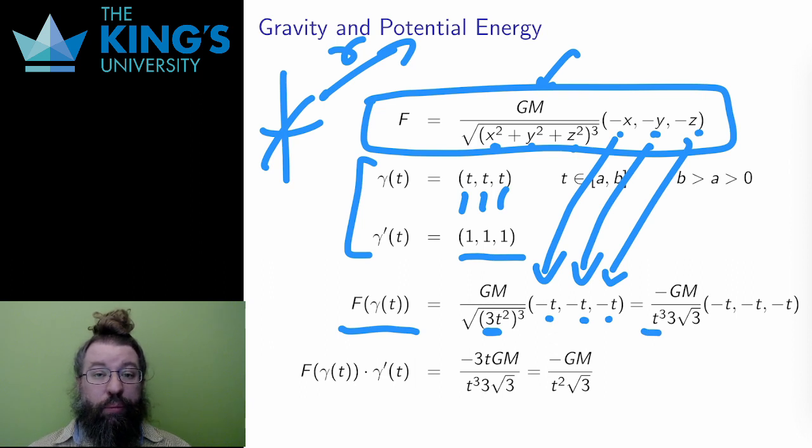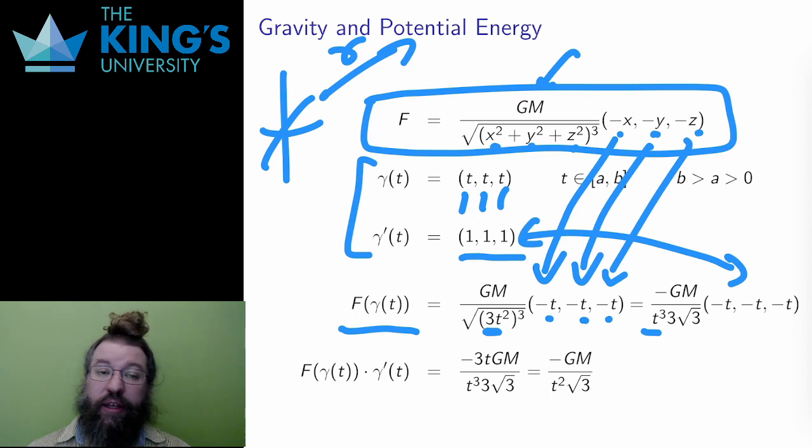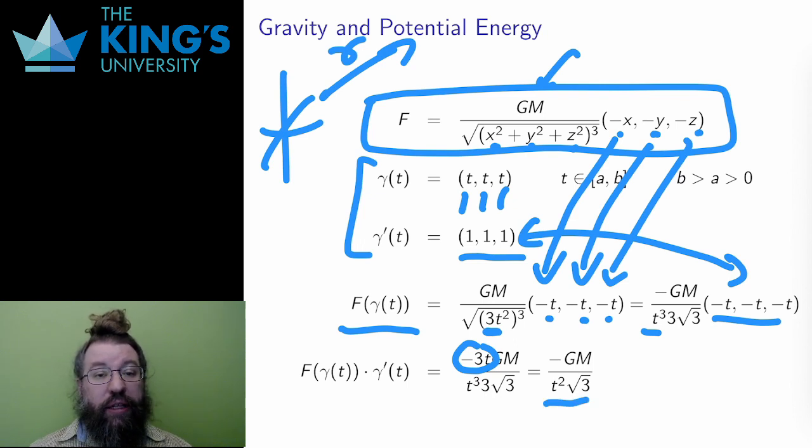And finally, I can take the dot product. (1,1,1) · (-t,-t,-t) is -3t. Well, then the 3 and the t cancel, resulting in the dot product of -GM/(t² √3).